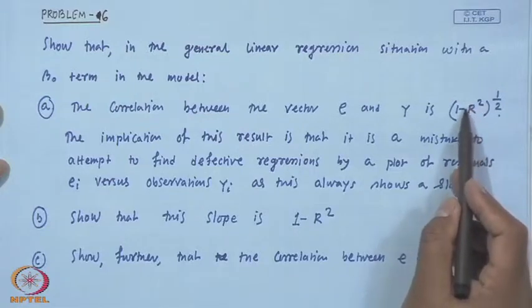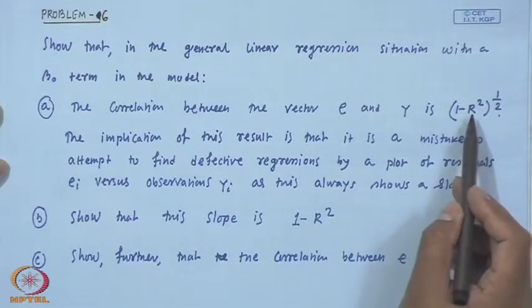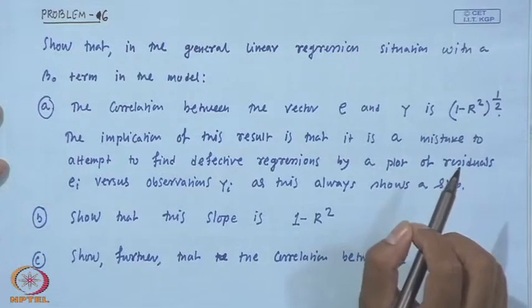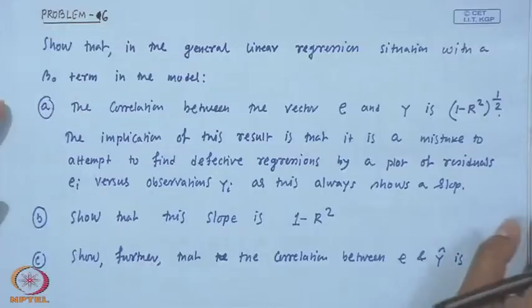We know that R-squared equals SS regression divided by SS total. This R-squared parameter measures the proportion of variability in y that is explained by the model.